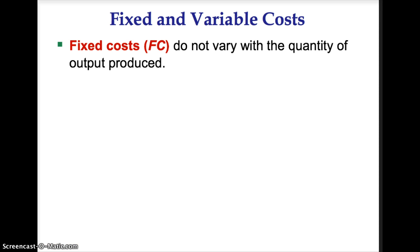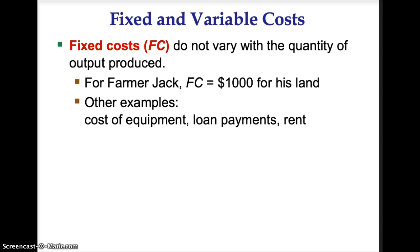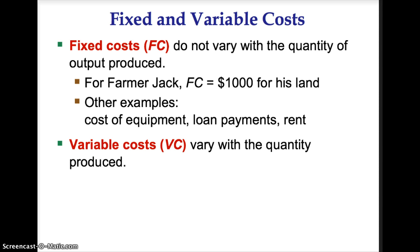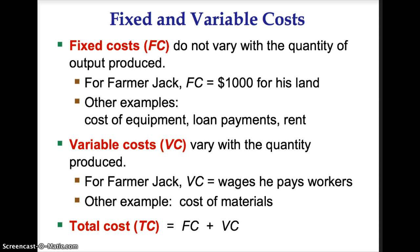Fixed costs, or FC, do not vary with the quantity of output produced. For Jack, his fixed costs are $1,000 for his land. Other examples of fixed costs might be the cost of equipment, loan payments, or rent. Variable costs, or VC, vary with the quantity produced. For Jack, his variable costs are the wages he pays the workers. Another example would be the cost of materials. Total cost, TC, is the sum of fixed costs and variable costs.